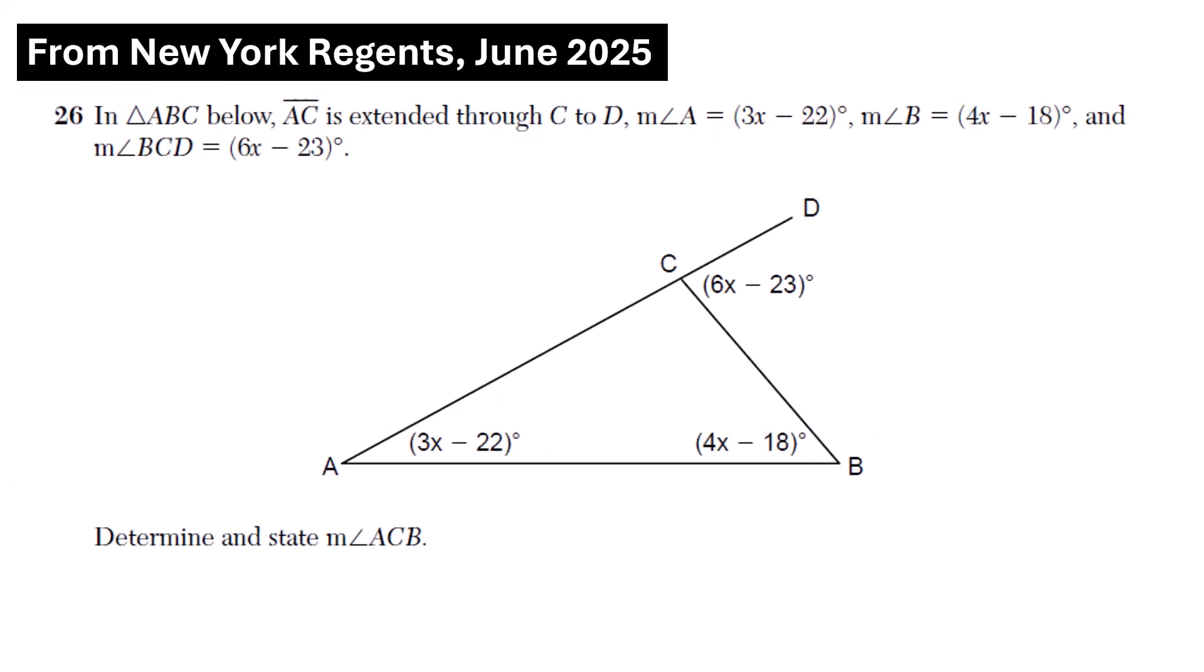I found this question on the released version of the New York Regents June 2025 geometry test. And look, it's just exactly like what we're doing. The language is a little scarier than the way I talk, but look at the diagram and you can get an idea of what this is. In triangle ABC below, AC is extended through C to D. So they're just saying they drew this line a little bit longer. Angle A is this, angle B is this, and angle BCD is this, and they put it in the diagram. So what they're asking for is for you to find ACB. Well ACB is this angle right here. So you have to add those two together and set it equal to the 6x minus 23.